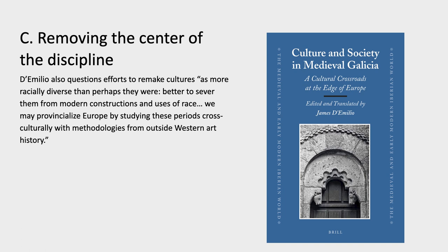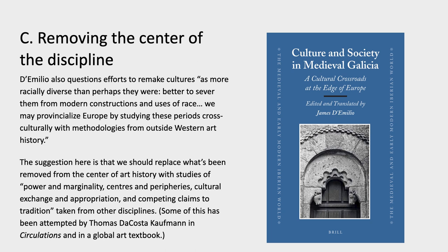We may provincialize Europe by studying these periods cross-culturally with methodologies from outside Western art history. The suggestion is to replace what's been removed from the center with studies of power and marginality, centers and peripheries, cultural exchange and appropriation, and competing claims to tradition from other disciplines. Questions about center and periphery have also been developed by art historians like Thomas de Costa Kaufmann in an edited volume called Circulations and a global art history textbook. These kinds of experiments have been done, maybe less frequently than the emphasis on race, class, and power in the first category.